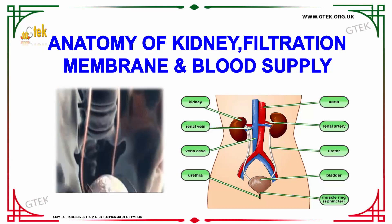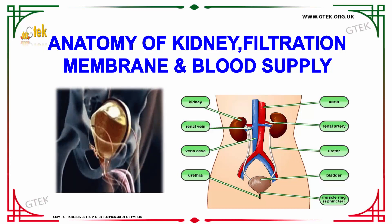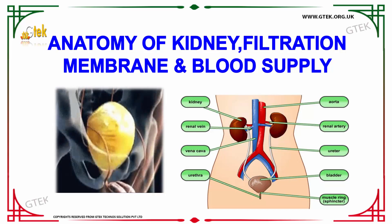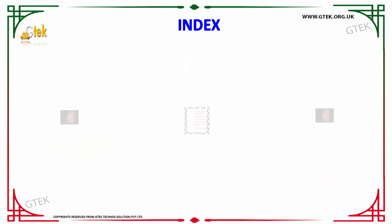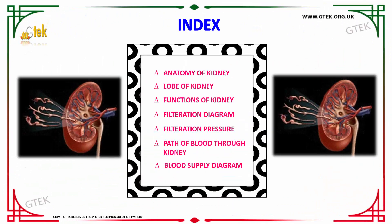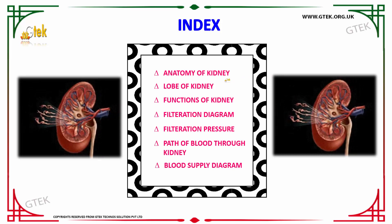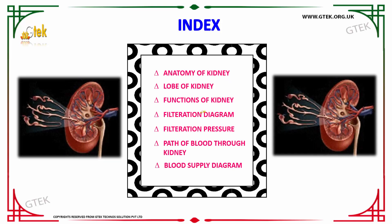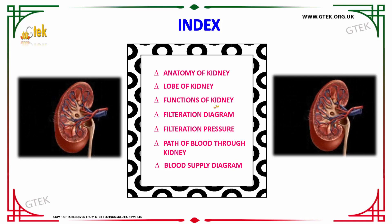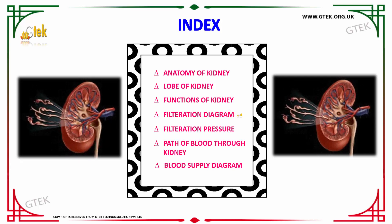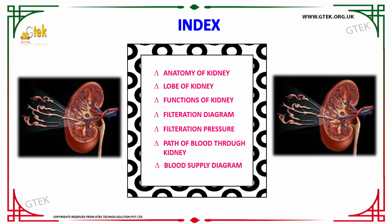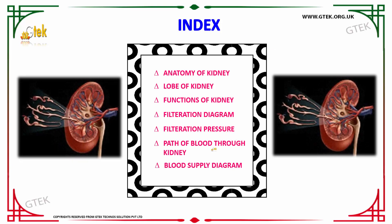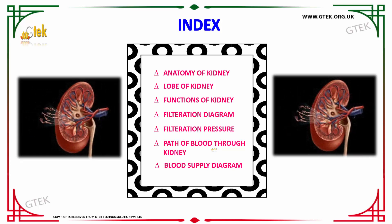Hi everyone, welcome to G-Tech Techno Solution Private Limited. Today we are going to discuss about the anatomy of kidney, filtration membrane and blood supply. We are going to cover: the anatomy of kidney, the lobe of the kidney, the functions of kidney, the filtration diagram, how the filtration process takes place, the filtration pressure, the path of blood through the kidney, and the blood supply diagram.